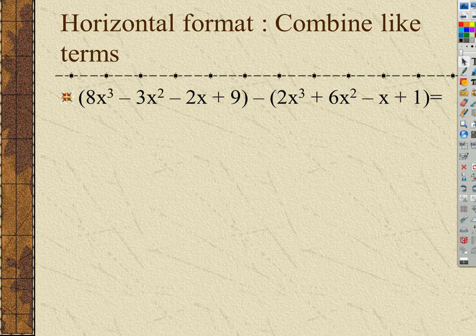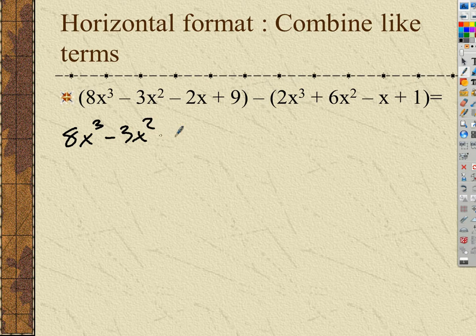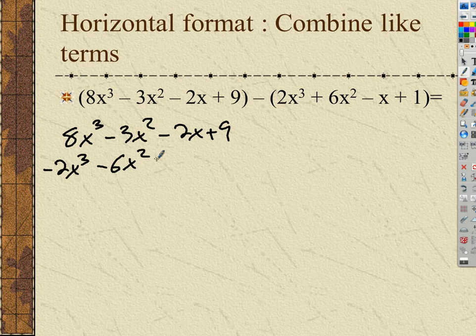If you're going to subtract polynomials, you can subtract them vertically — the same way we did before, only subtracting instead of adding. Or the other thing I'd suggest is to just distribute the negative sign all the way through and add them. We don't even need parentheses for the first polynomial because there's a 1 in front — distributing doesn't change anything. So I get 8x cubed minus 3x squared minus 2x plus 9. Over here, distributing that negative sign gives negative 2x cubed, minus 6x squared, plus x, minus 1. Add them up vertically and you're done.